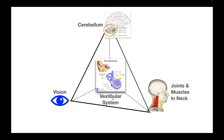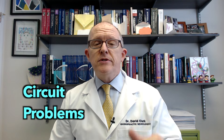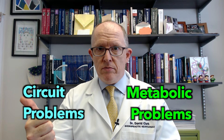When the cerebellum malfunctions, one of the obvious things you start to see is balance problems — dystaxia and ataxia — and sometimes eye movements will start to become choppy, not coordinated, and not accurate. The bigger question is: what would cause the cerebellum to malfunction? There are two main things to consider: circuit problems and metabolic problems.